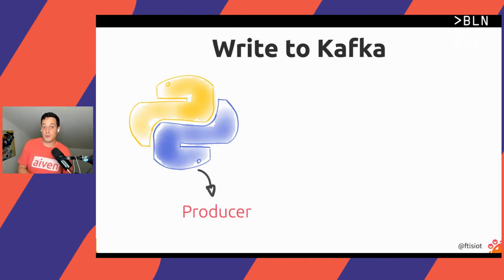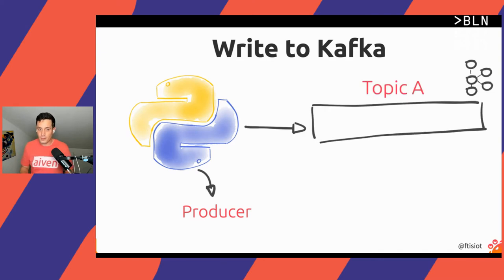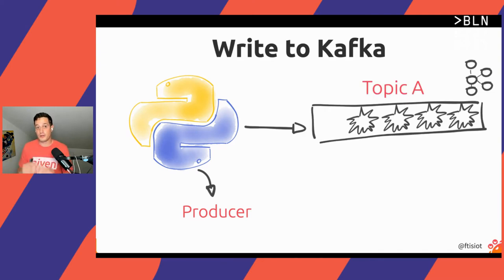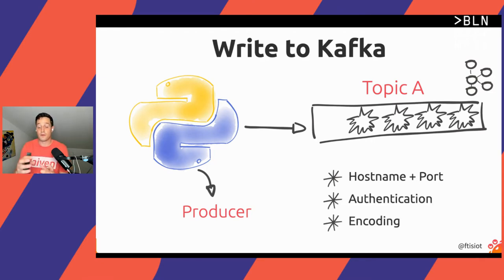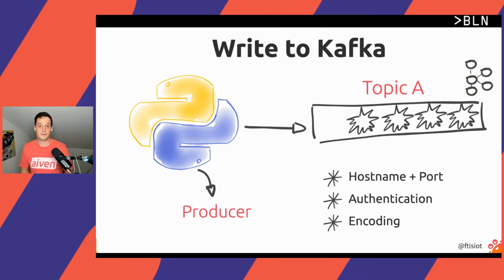In order to produce data to a topic, all the producer needs to know is where to find Kafka (hostname and port of the brokers), how to authenticate to Kafka using SSL, and how to encode the data from the JSON format used internally to the raw series of bytes that Kafka understands.